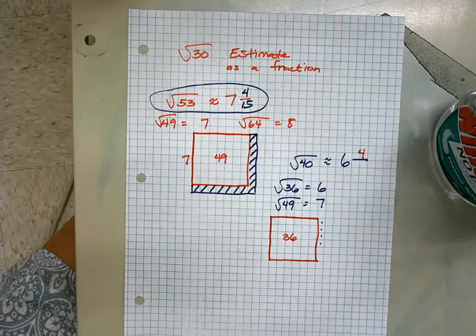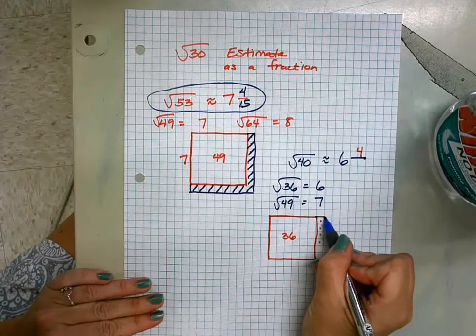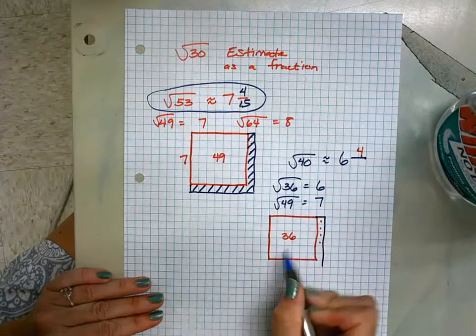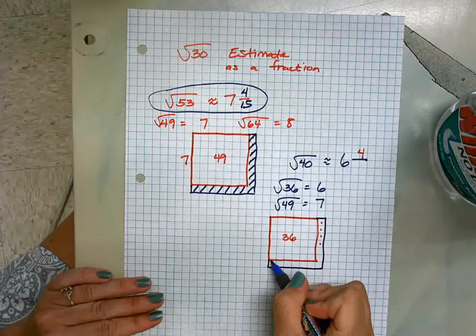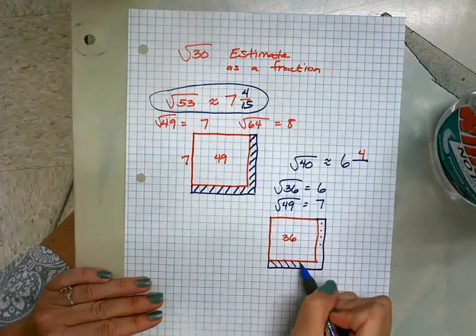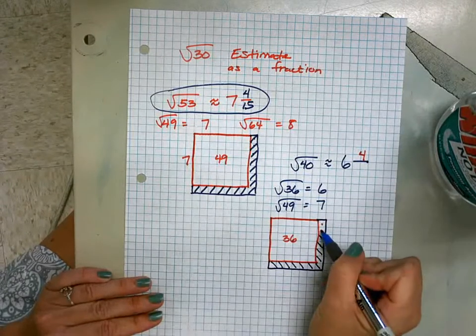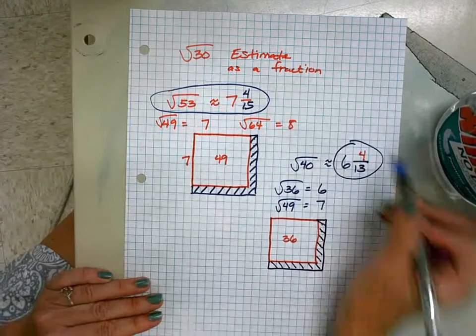1, 2, 3, 4, 5, 6, 7, 8, 9, 10, 11, 12, 13. 6 and 4 thirteenths.